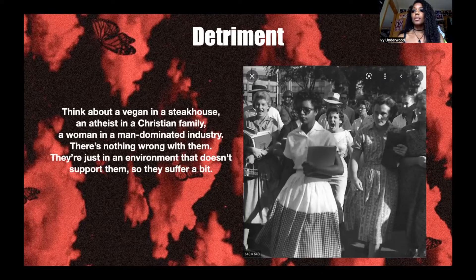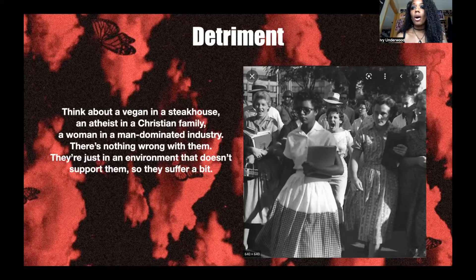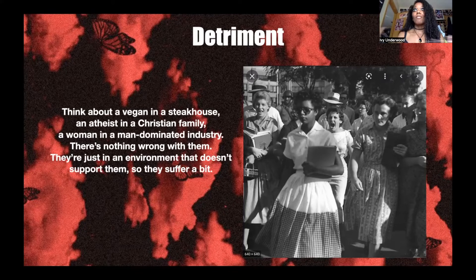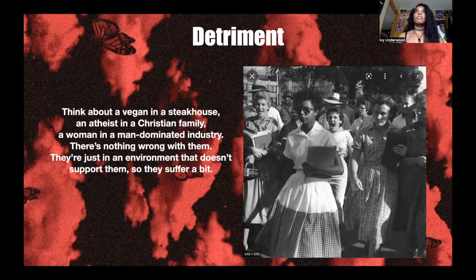Many people think that having a planet in detriment means there's something wrong with them, but most of the time in a birth chart, there is actually nothing wrong with you. It means that you are who you are, but for some annoying reason, you have found yourself in circumstances that just don't vibe with who you are — they don't support you, they are opposite everything you stand for and believe in. You may suffer a bit from feeling like you don't belong, feeling out of place, feeling exiled.